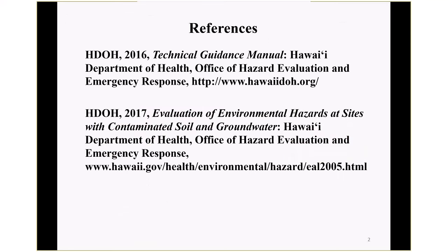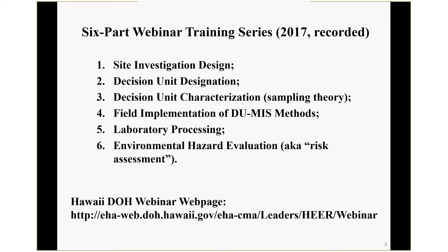A few quick references: the Technical Guidance Manual describes how decision-unit multi-increment sampling investigation methods are carried out in the field and the theoretical background. Also, we have a document titled Evaluation of Environmental Hazards at Sites with Contaminated Soil and Groundwater — our risk assessment guidance with special focus on environmental screening levels or action levels. I also have a six-part webinar series from 2017 posted to our office's YouTube channel.